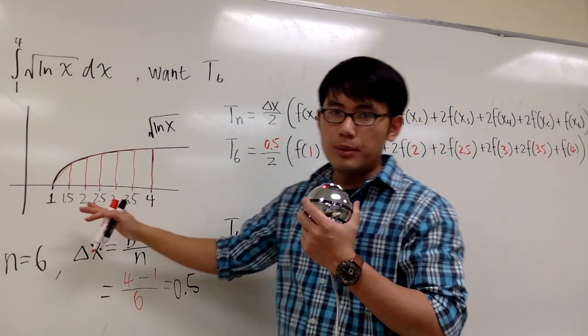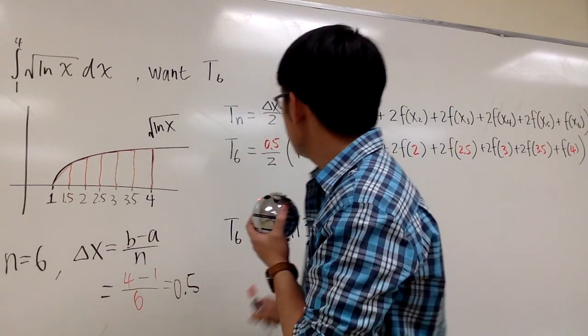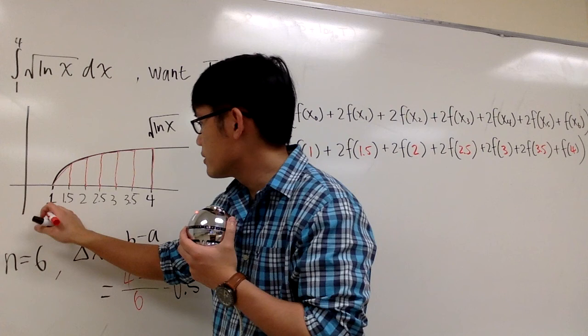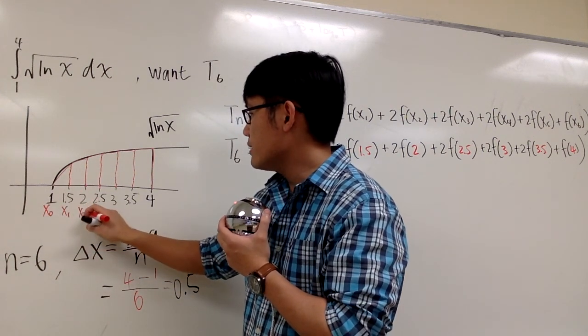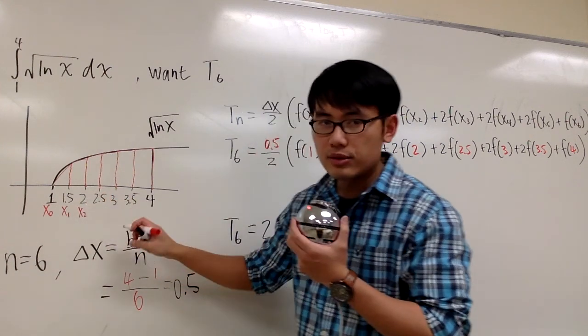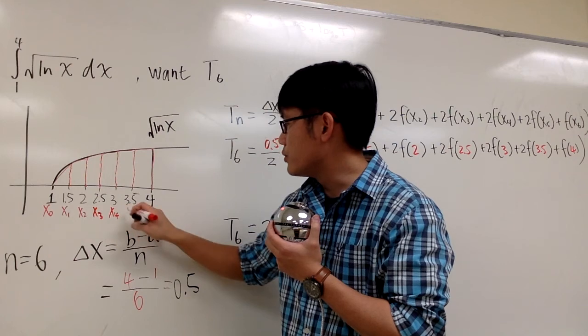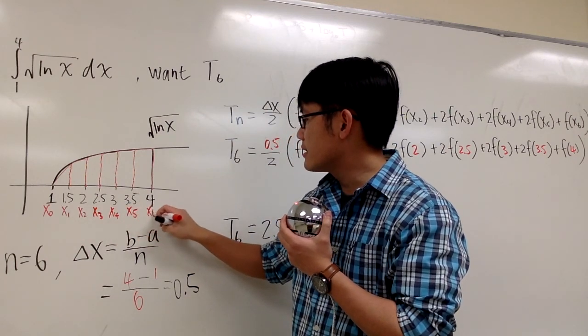And I just need to show you guys the labeling, and then you can plug it into the formula. So we have a bunch of these numbers, and then x_0 is your starting value, which is 1. So this is x_0, which is 1, and then x_1 will be 1.5, x_2 will be 2, and then x_3 will be 2.5, x_4 will be 3, x_5 will be 3.5, and x_6 will be 4.